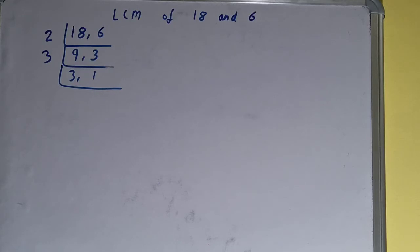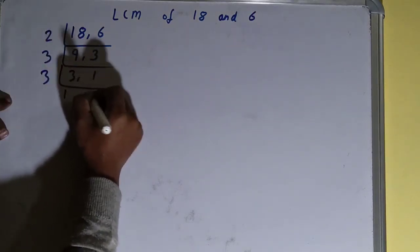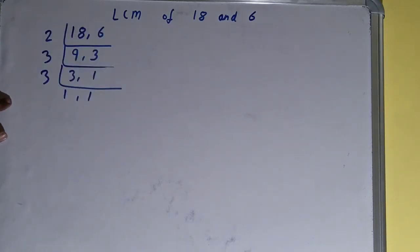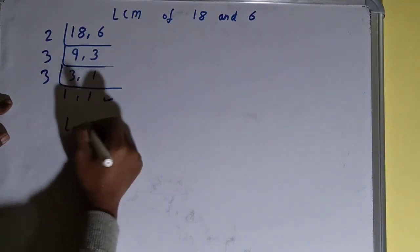Now again if we check, is any of the numbers divisible by 3? Only the first number is, so we'll divide and we'll be having 1 comma 1. The second number was not divisible by 3, so we just copied it down. Now once we get 1 comma 1, we need to stop and we need to do one last thing.